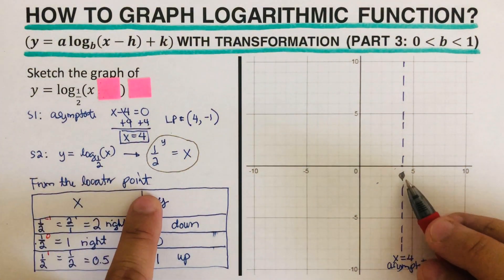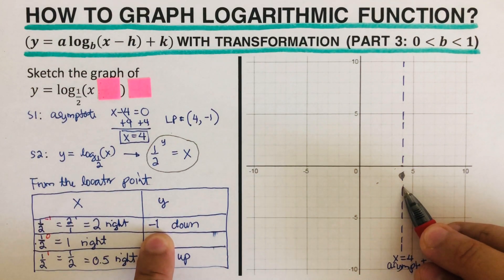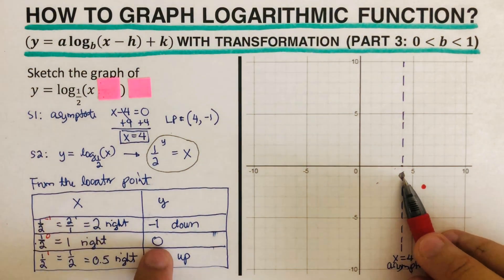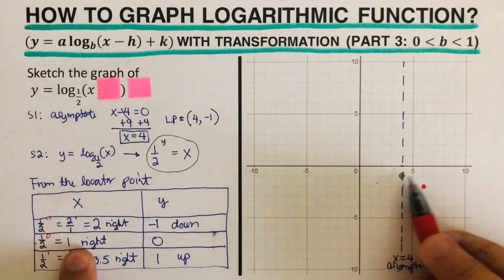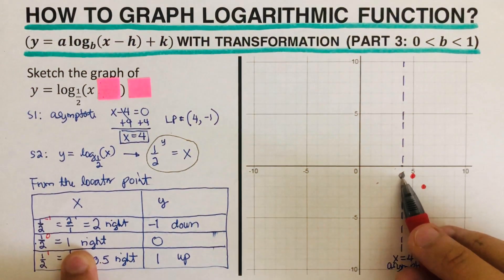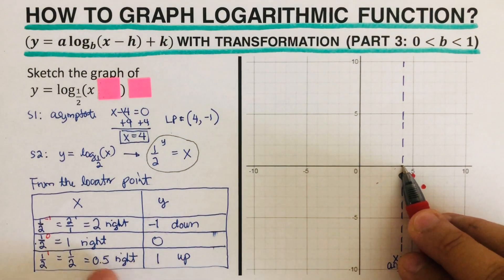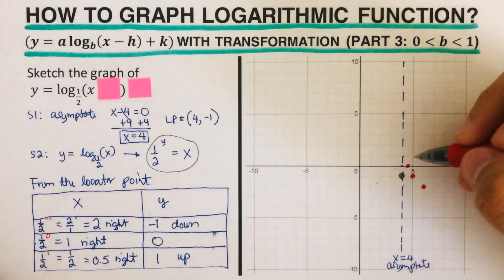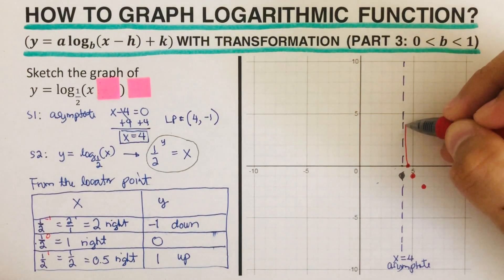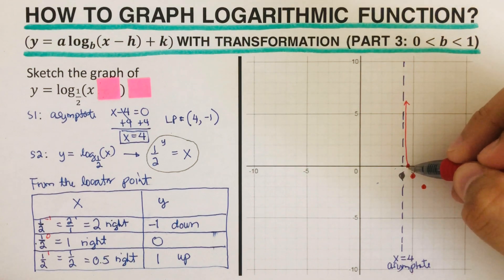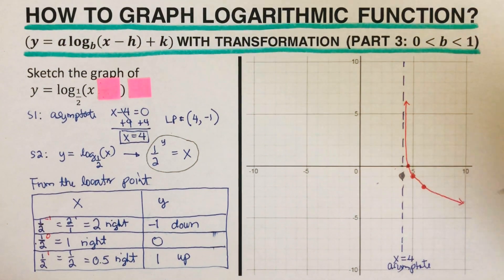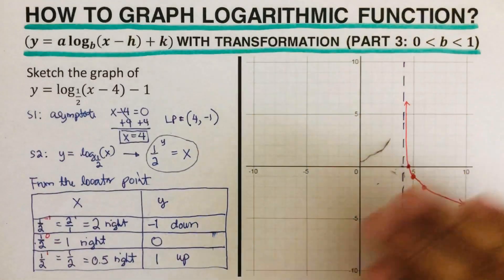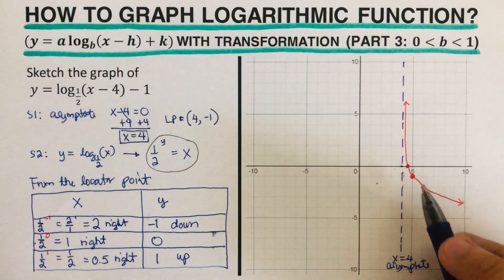Now we're ready to sketch the graph. From the locator point, we go down one and to the right two — that's the first dot. From the locator point with zero change vertically, we go one right. Then from the locator point we go one up and 0.5 right. Be sure the graph does not touch the asymptote — it gets closer and closer but will never touch it. Remember to erase the locator point at the end.